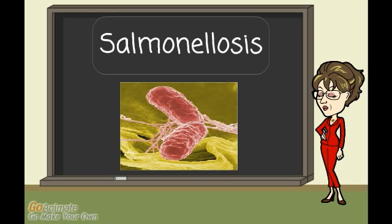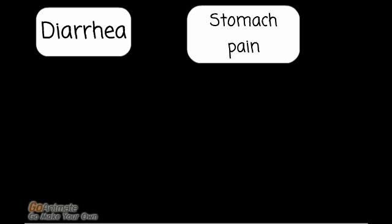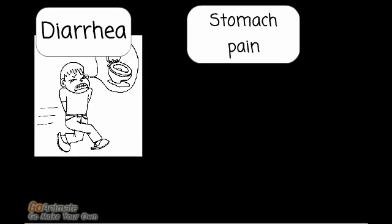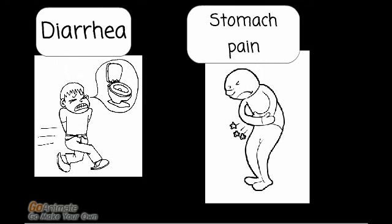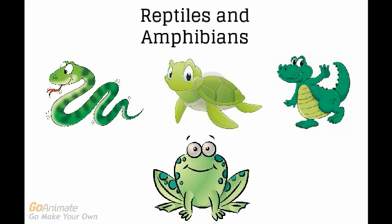Salmonella, also known as salmonellosis, is another type of bacterial disease caused by the bacterium called Salmonella. Most people have diarrhea, fever, and stomach pain that start one to three days after they get infected. The diarrhea can get severe or the infection can spread. Reptiles and amphibians that live in tanks or aquariums can contaminate the water with salmonella, which can lead to illness in people.